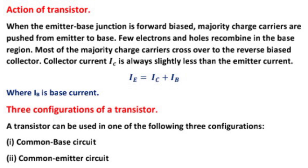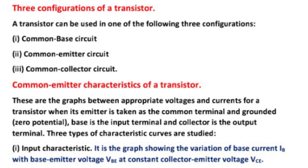The configuration of a transistor. There are three configurations of a transistor. First configuration is common base CB circuit. Second is common emitter CE circuit. And third is common collector CC circuit.